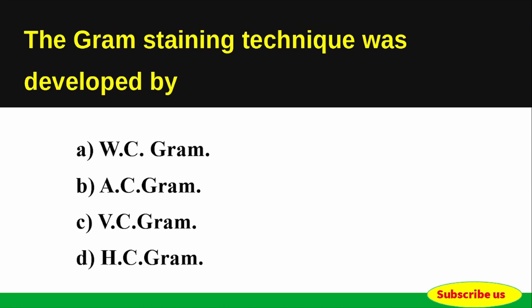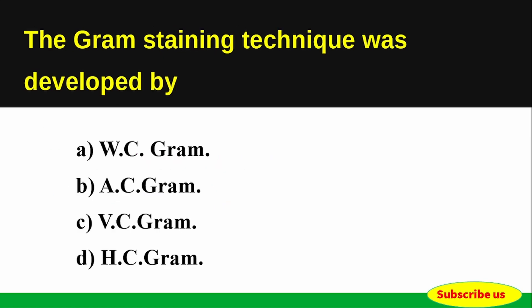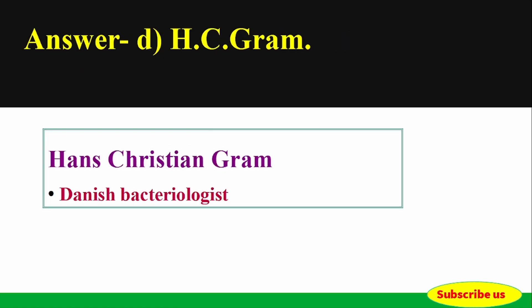Question: The Gram staining technique was developed by — Options: A) WC Gram, B) AC Gram, C) VC Gram, D) HC Gram. Correct answer: Option D — HC Gram. HC Gram was a Danish bacteriologist who developed the Gram staining technique.